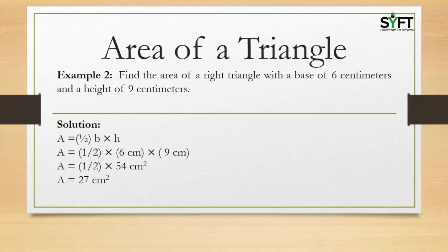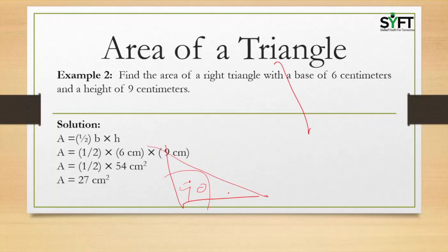Second example: Find the area of a right angle triangle with a base of 6 centimeters and a height of 9 centimeters. A right angle triangle is one where one angle is exactly 90 degrees. Here the base is 6 centimeters and the height is 9 centimeters.